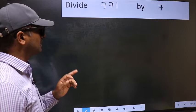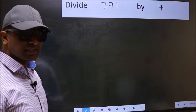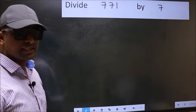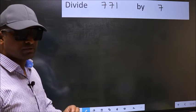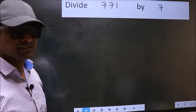Divide 771 by 7. While doing this division, many make this mistake. What is the mistake that they do? I will let you know, but before that, we should frame it in this way.